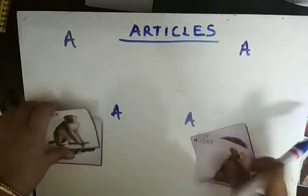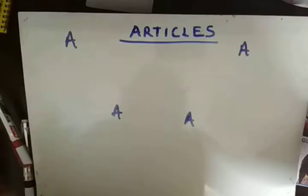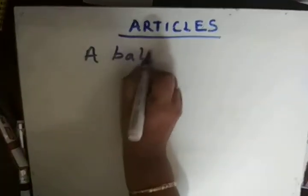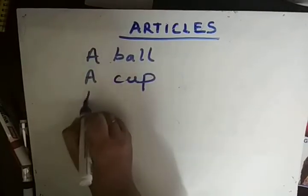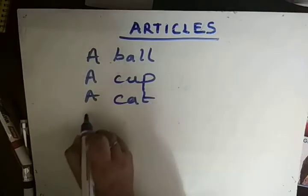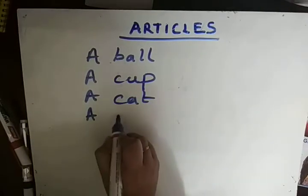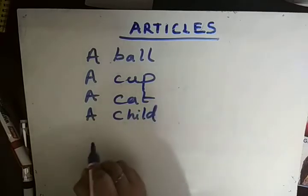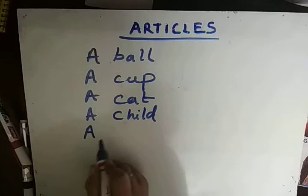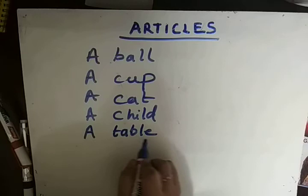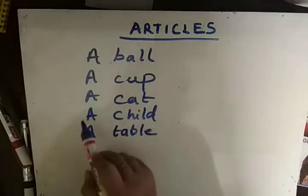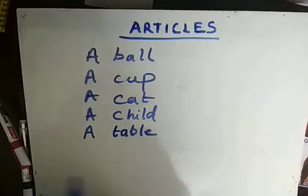Let's see more examples. I'll write more examples here so you can easily remember. A ball, a cup, a cat, a child — all are singular, notice that, all singular. A table. I have written A, but when I say them: a ball, a cup, a cat, a child, a table. Understood. So next we see the article AN.